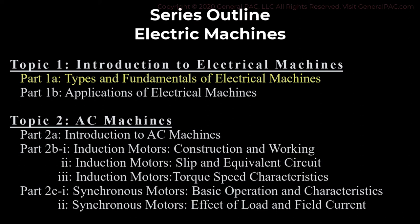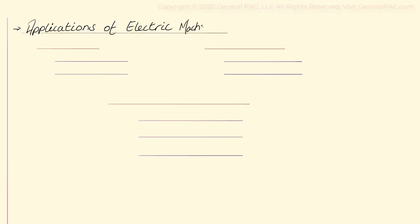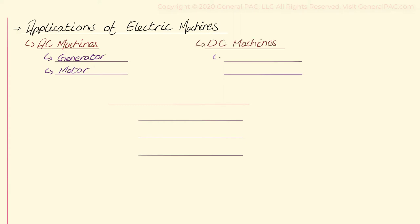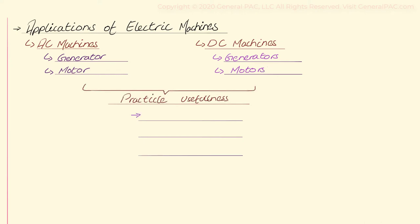Introduction to electric machines, part 1b: Application of electric machines in the power system. This is the second part of topic 1 in the series of electric machines. In this part we will be discussing the different applications of electric machines, starting with AC machines, followed by DC machines. So where are electric machines used?